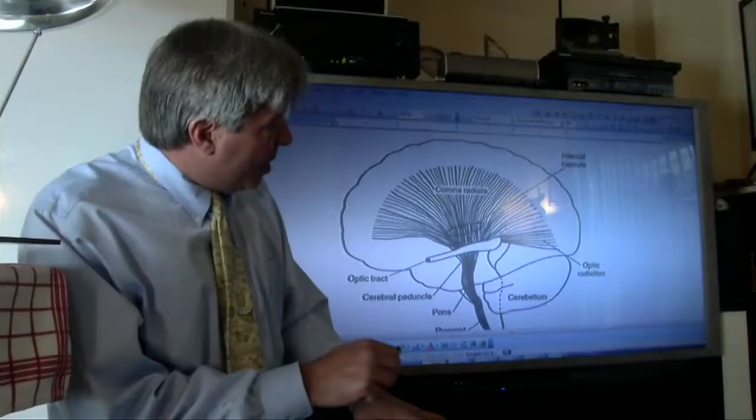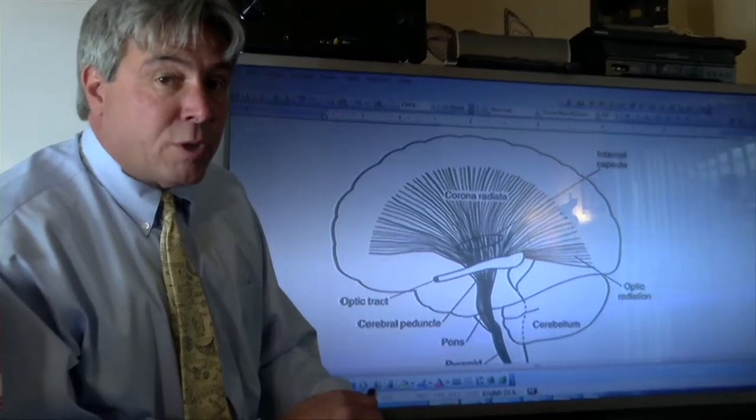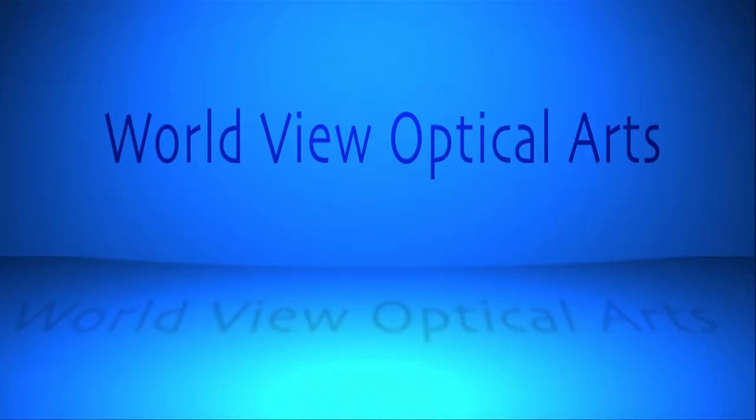You can see here the corona radiata is basically a set of projection fibers emanating from the thalamus area all the way out to the cortex.